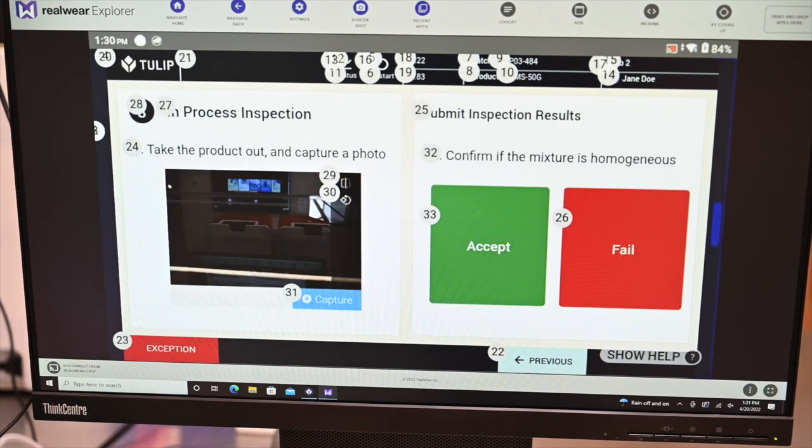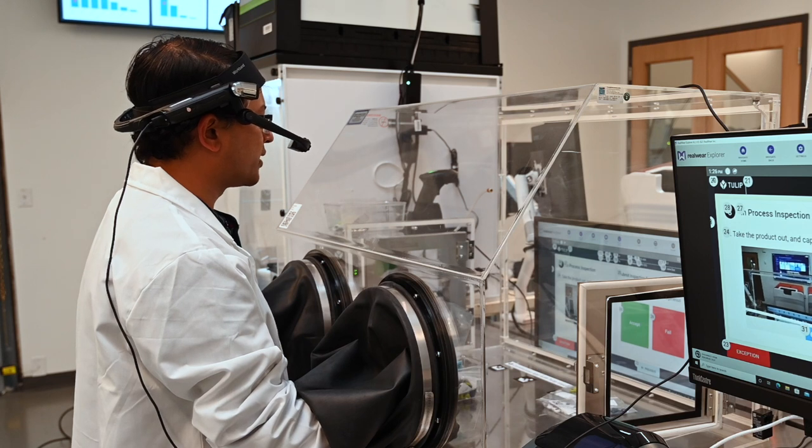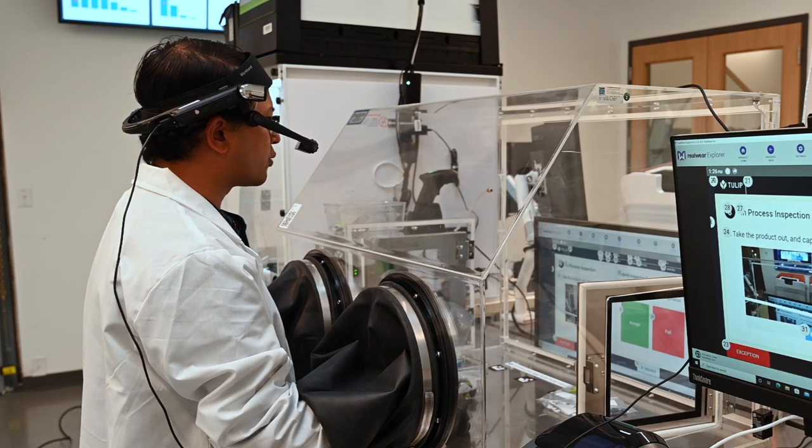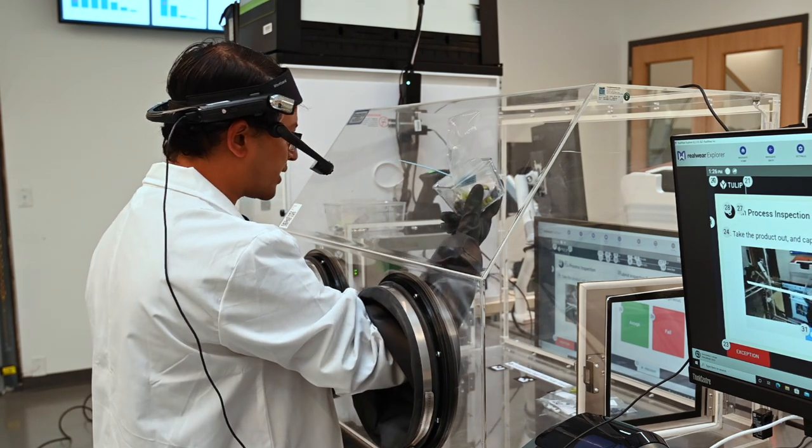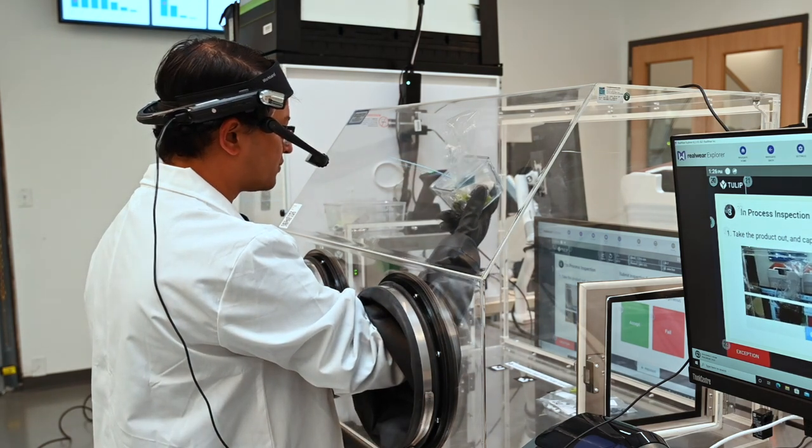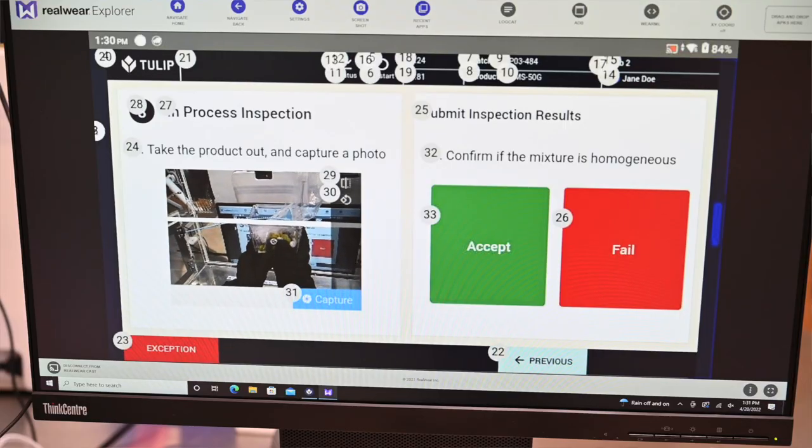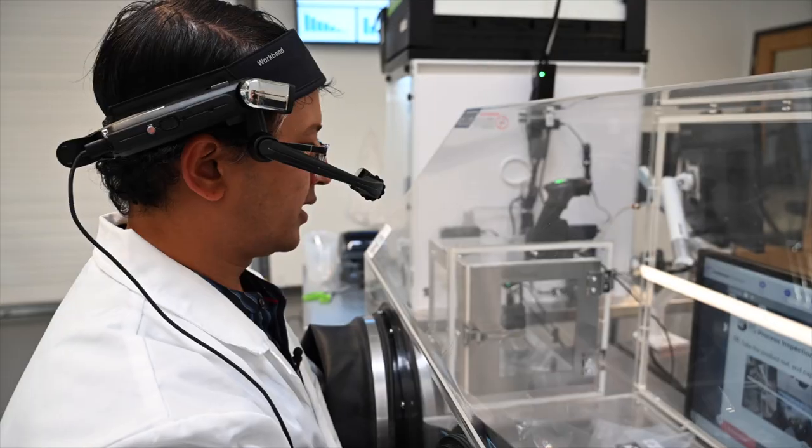Next, I need to do some in-process inspection. Using vision cameras, we can automate this process as well. But for this demo, I'm just using my RealWear to capture an image, capture, and accept or pass this test. Accept.